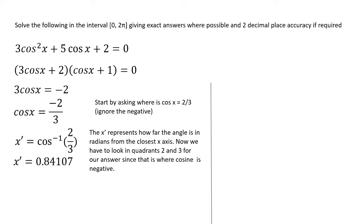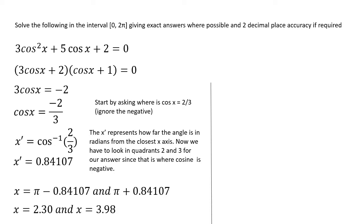I'm deviating from the x-axis to give a second quadrant angle and a third quadrant angle. For a second quadrant angle, I take pi minus 0.84107. For the third quadrant, I take pi plus 0.84107. Those two values give me the two angles I need, rounded to two decimal places as required.